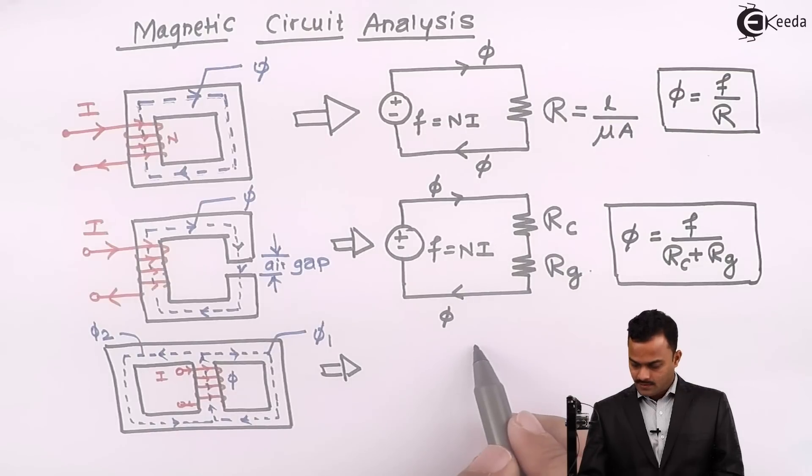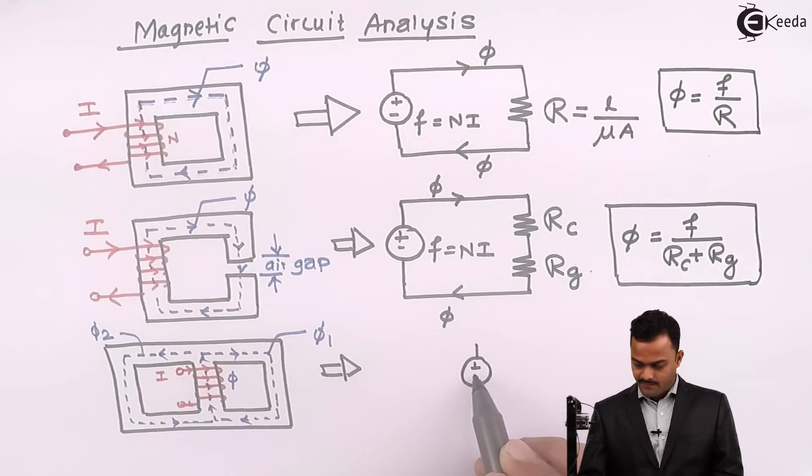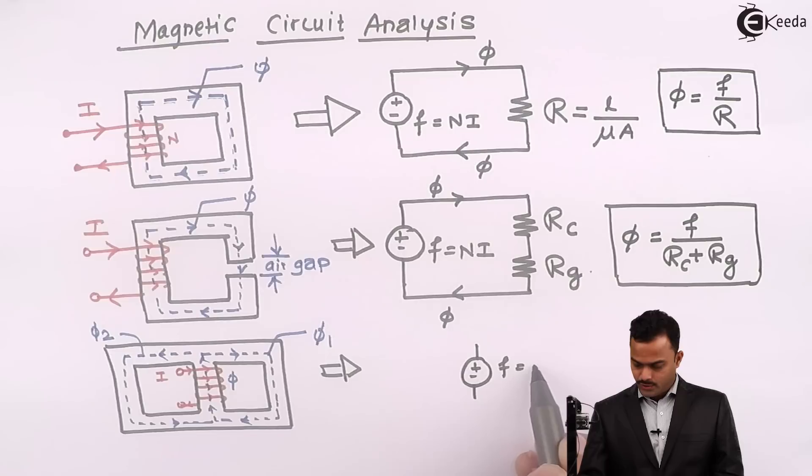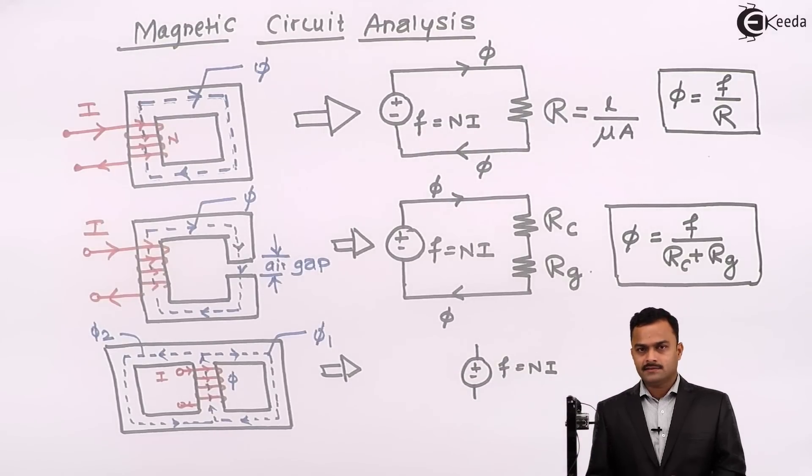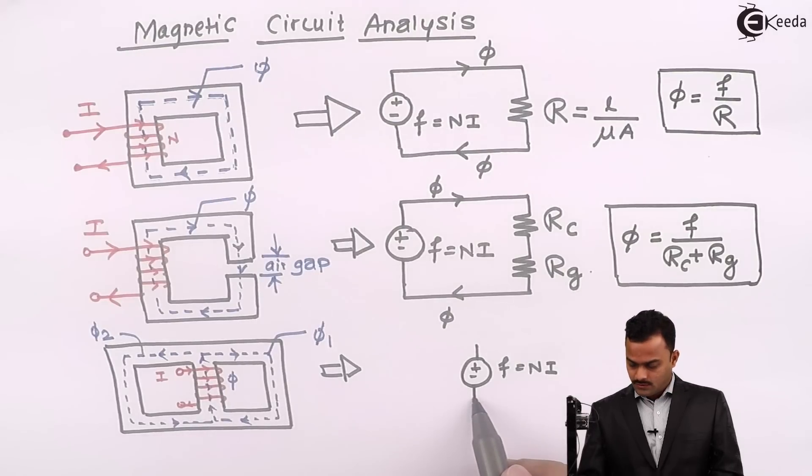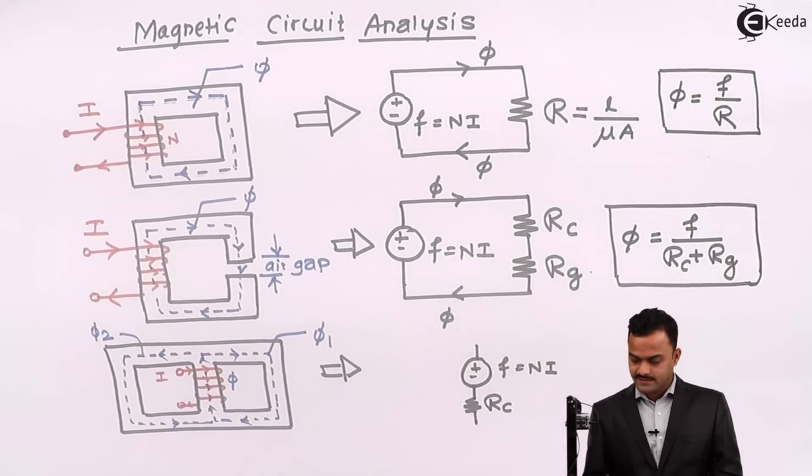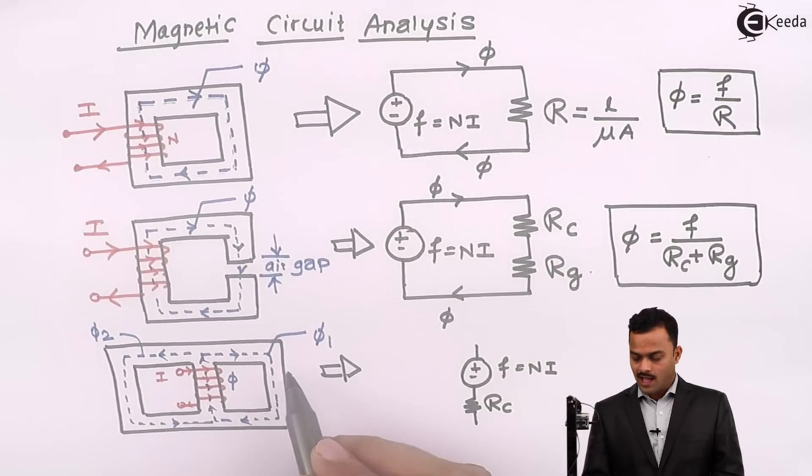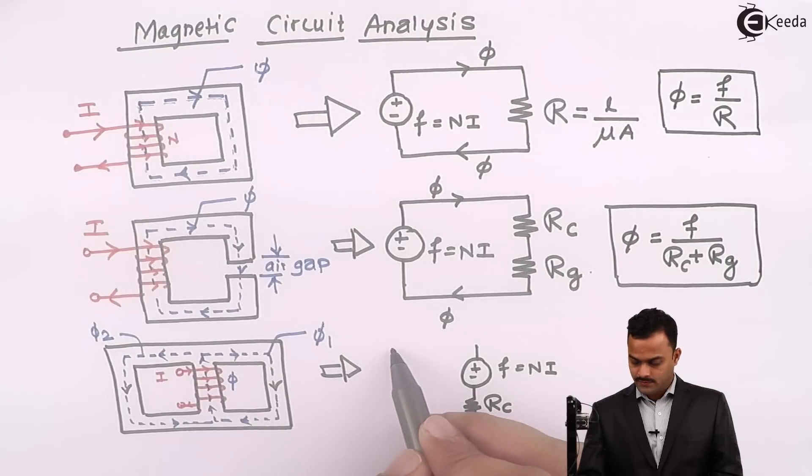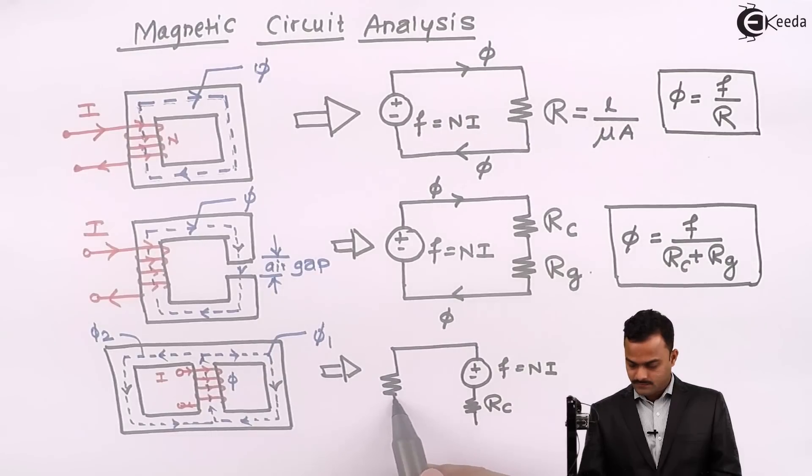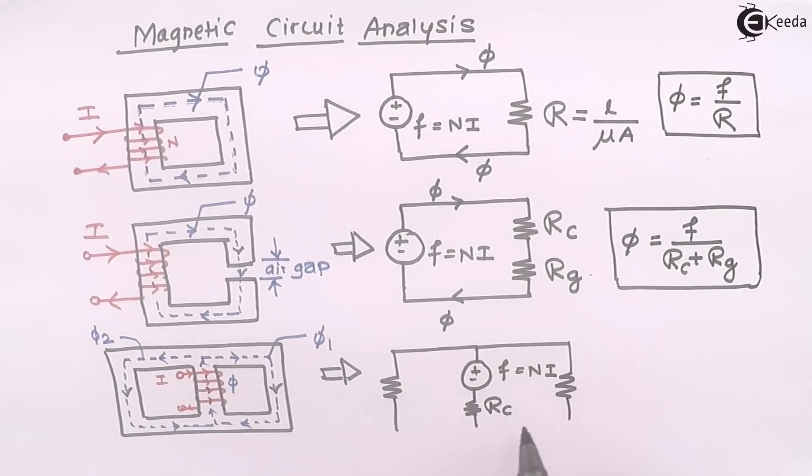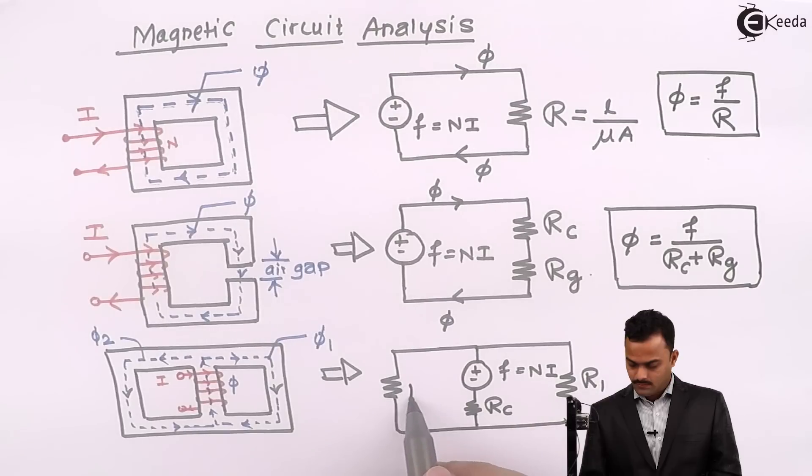Basically, I will have MMF just like EMF: N times I. And I have three magnetic circuits because I have three fluxes. First is flux φ, so that will be like this. I will consider reluctance as Rc. The remaining two fluxes will be confined through this part of the core, having a reluctance different than this part of the circuit. So it will be like this. Two reluctances are R₁ and R₂.